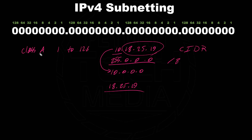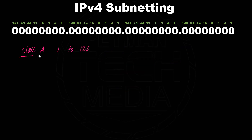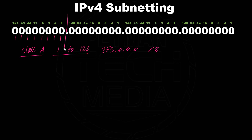Now let's talk about the differences between network bits, subnet bits, and host bits. The Class A default subnet mask is 255.0.0.0, or /8 for the prefix. That means we have 8 bits for the network bits — this is our cut line — and the rest are the host bits, represented by all zeros.